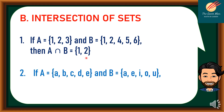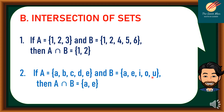Another example: if A is equal to {A, B, C, D, E} and B is equal to {A, E, I, O, U}. Taking the common elements, A intersection B is only {A, E}.